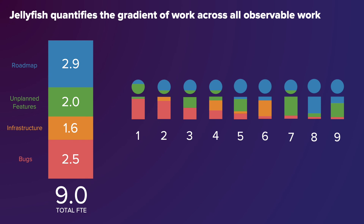This investment allocation time series expresses the whole organization's focus. But what's really behind it is someone who spent most of their time on bugs, someone else who spent a little bit of time on bugs but mostly features, and so on. The Jellyfish allocation model is doing the math to express that in a digestible, yet quantifiable, way for all end users.